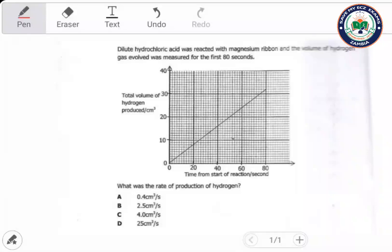The question says dilute hydrochloric acid was reacted with magnesium ribbon and the volume of hydrogen gas evolved was measured for the first 80 seconds. Volume is here and you have time here. It asks: what was the rate of production of hydrogen?